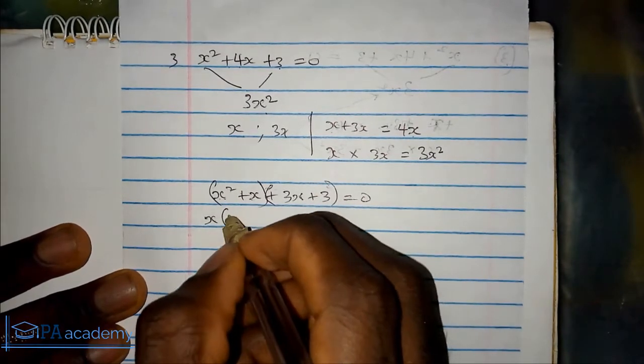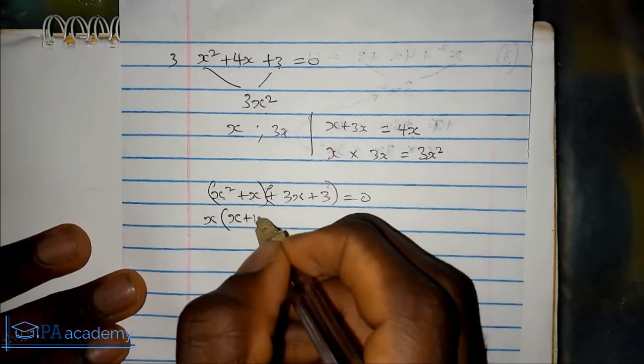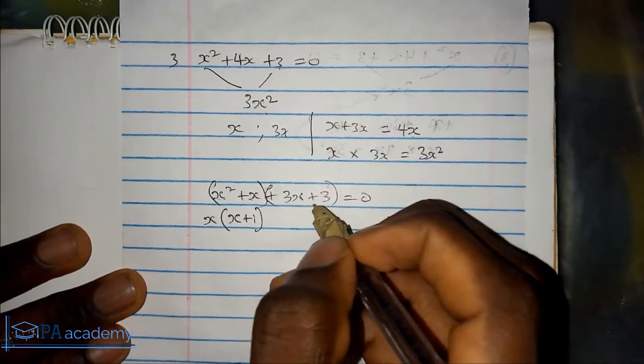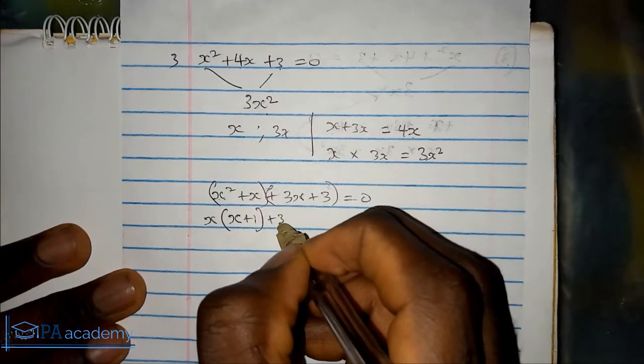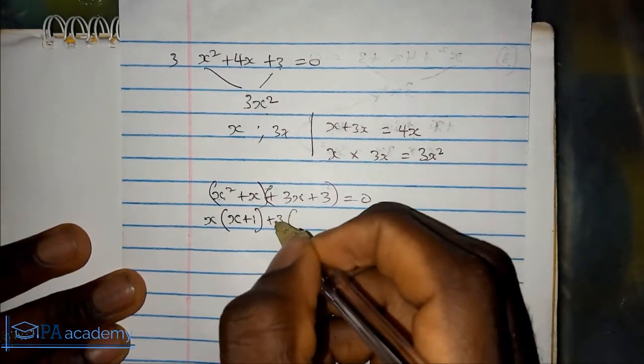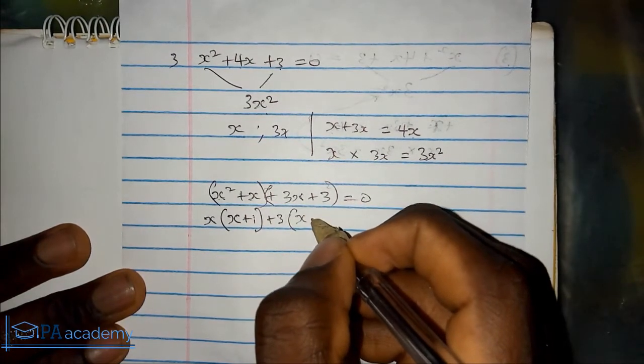So if we have x, x squared divided by x leaves x. x divided by x leaves plus 1. And here, what's common is 3, so plus 3. 3x divided by 3 is x, 3 divided by 3 gives us plus 1.